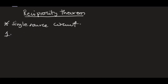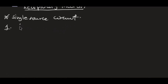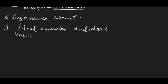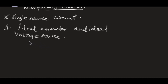The first way of stating the reciprocity theorem deals with an ideal ammeter and ideal voltage source. What this states is: an ideal ammeter and ideal voltage source, when inserted into two different branches of a linear circuit, can be interchanged without changing the reading of the ammeter.